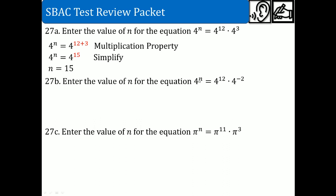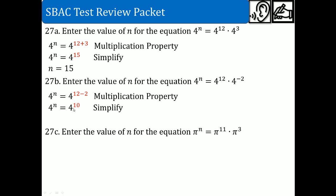The second one uses the same process — same base of 4. This is the multiplication property of exponents, also called the power property. The powers are 12 and negative 2; you add them: 12 plus negative 2, which is the same as 12 minus 2, gives you 10. So n equals 10.